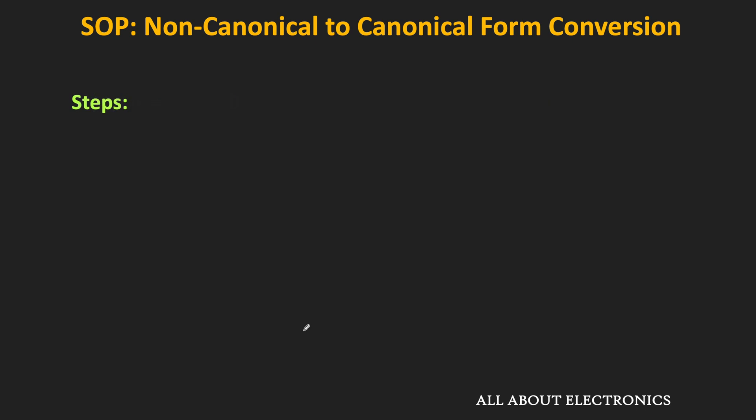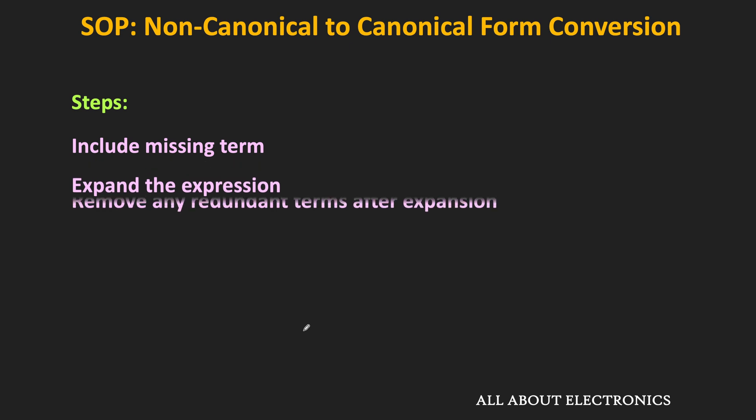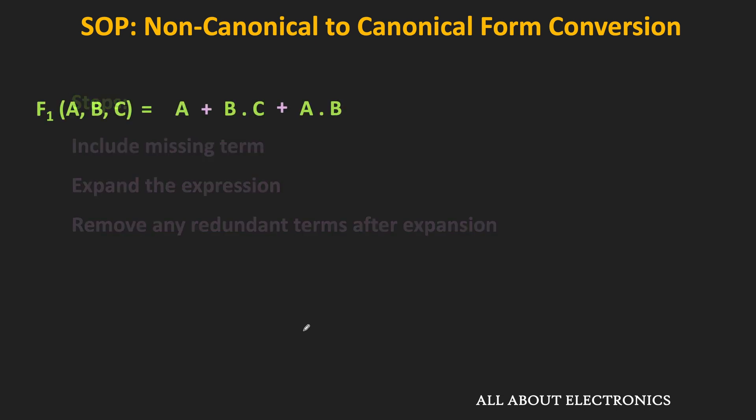For the conversion, you just need to follow three simple steps: first, include the missing variables in each product term; then expand that expression; and then remove any redundant terms after the expansion. To understand this more clearly, let us take a few more examples.